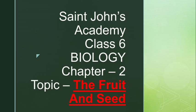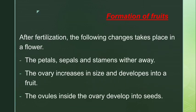After the process of fertilization takes place in the plant or inside the flower, a fruit is formed and then a seed is formed. Formation of fruits: after fertilization, the following changes take place in a flower.